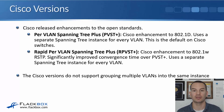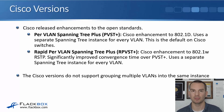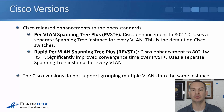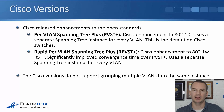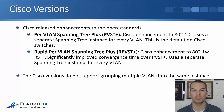The next Cisco version was Rapid Per VLAN Spanning Tree Plus. This came out at around the same time as 802.1w, which was the second open standard implementation with faster convergence time. Rapid PVST+ also significantly improves the convergence time over PVST+. Like PVST+, it uses a separate spanning tree instance for every VLAN. With MST you can group multiple VLANs into the same spanning tree instance, but with the Cisco versions — PVST+ and Rapid PVST+ — they use a separate spanning tree instance for every single individual VLAN.